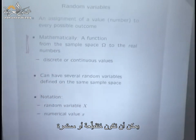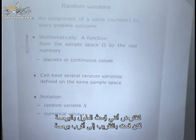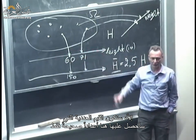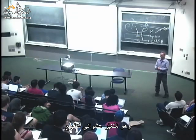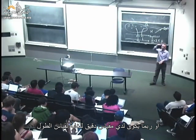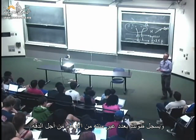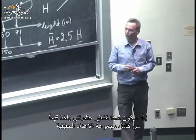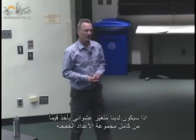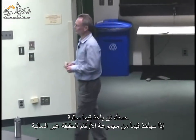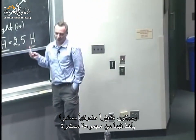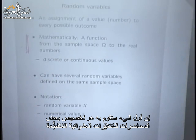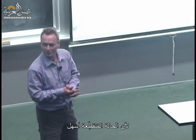Random variables can be discrete or continuous. Suppose I measure height in inches but round to the nearest inch — then the numerical values will be just integers, making it an integer-valued discrete random variable. Or maybe I have a scale of infinite precision, giving a general real number — a continuous random variable. We will first devote a few lectures to discrete random variables, because discrete is always easier.